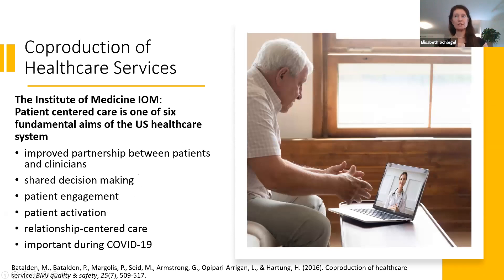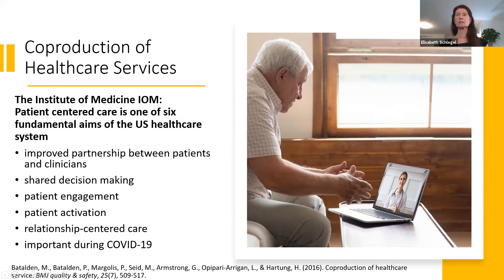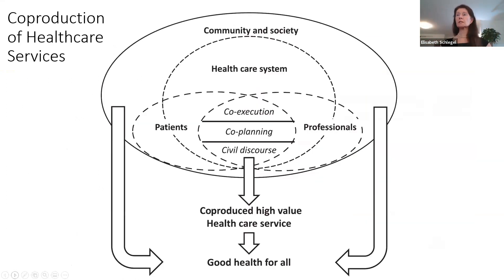Looking into co-production of healthcare services, this should really be patient-centered care at its very core. According to the Institute of Medicine, patient-centered care is one of the six fundamental aims of the US healthcare system. Hence, co-production of healthcare services includes all stakeholders in such a system — shared decision making, patient engagement, patient activation, relationship-centered care. However, it's very hard to attain. Healthcare systems have a lot of stakeholders and components anchored in communities and societies, and they all have roles and opinions.